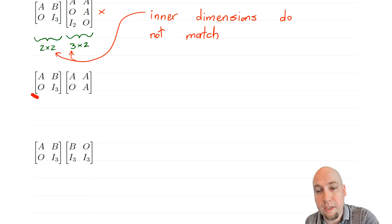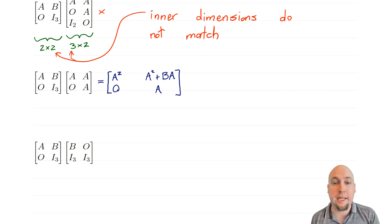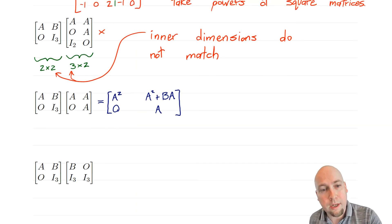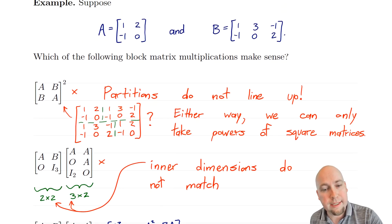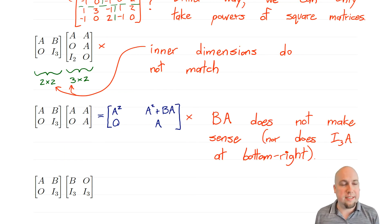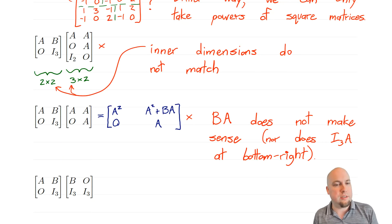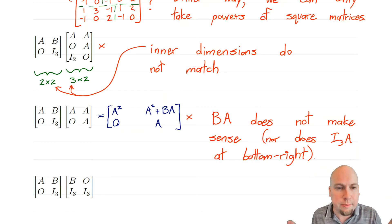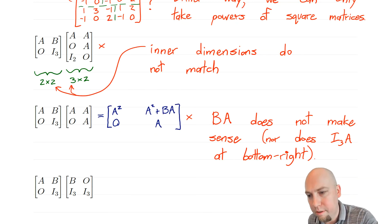What about a 2×2 block matrix times a 2×2 block matrix? At first glance that seems fine. Multiplying out, I get A², 0, A, and A²+BA. But wait — B is a 2×3 matrix and A is 2×2. So B×A means a 2×3 times a 2×2, and those inner dimensions don't match. Also in the bottom right, it would be a 3×3 identity times a 2×2 A, which is also impossible. So neither right-column entry actually makes sense.